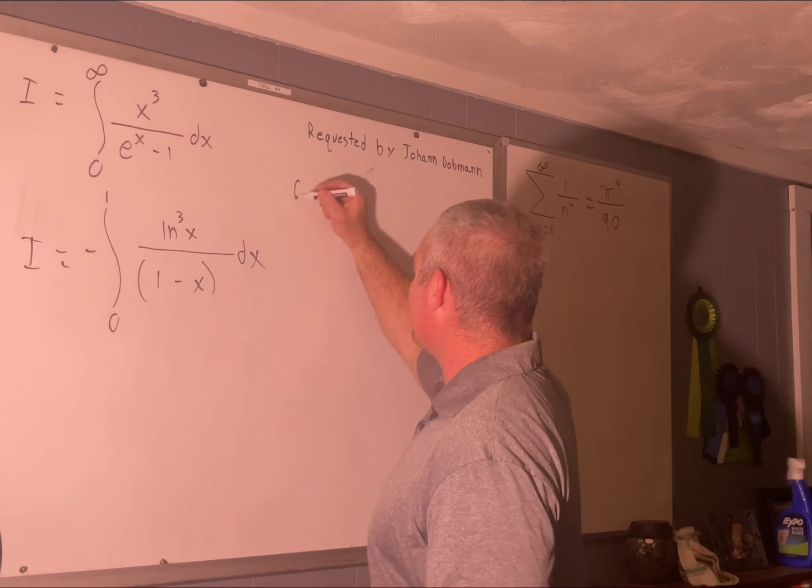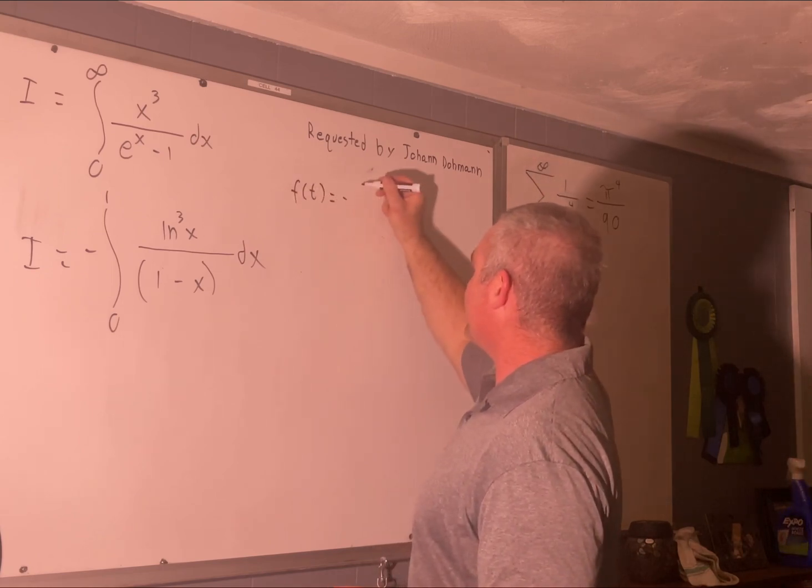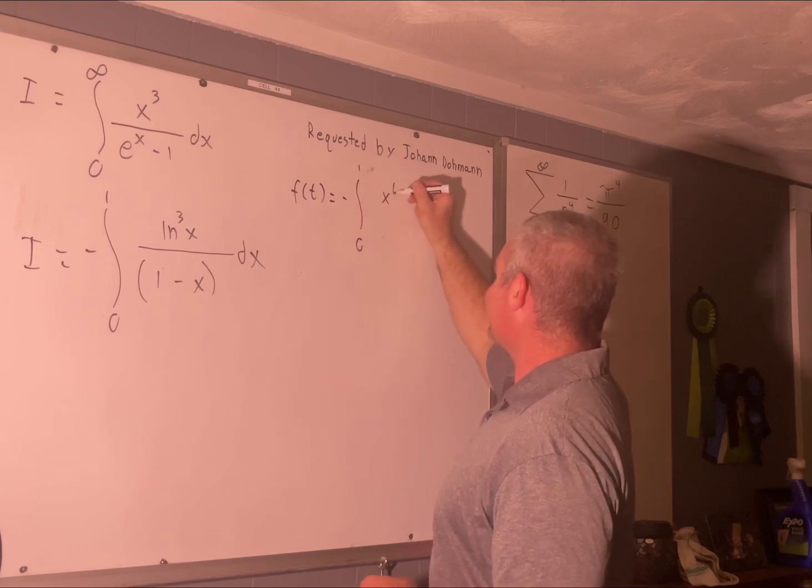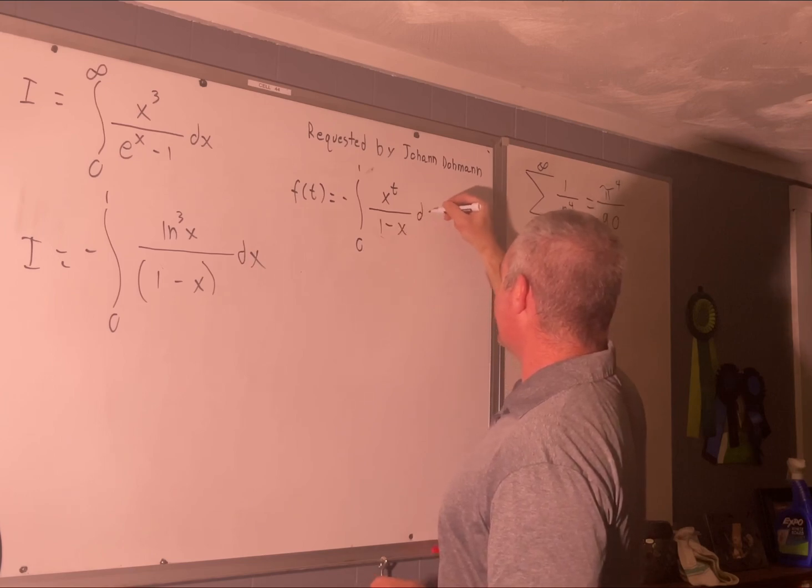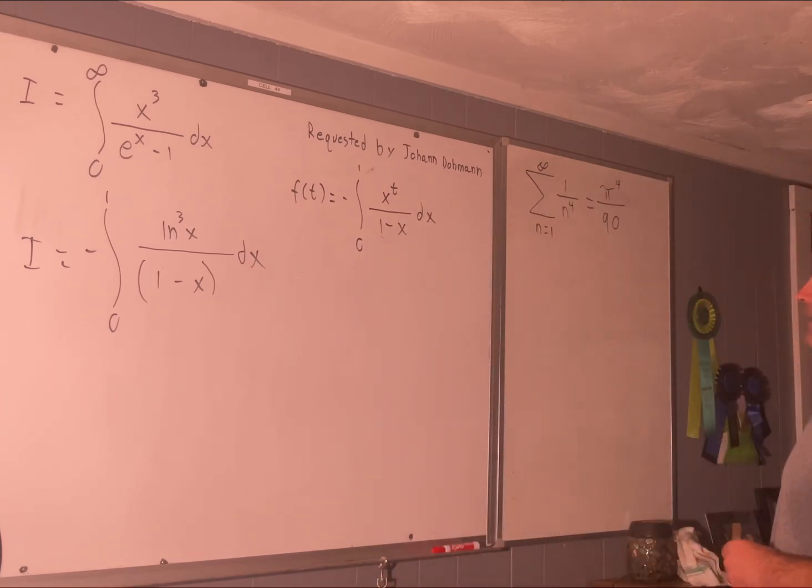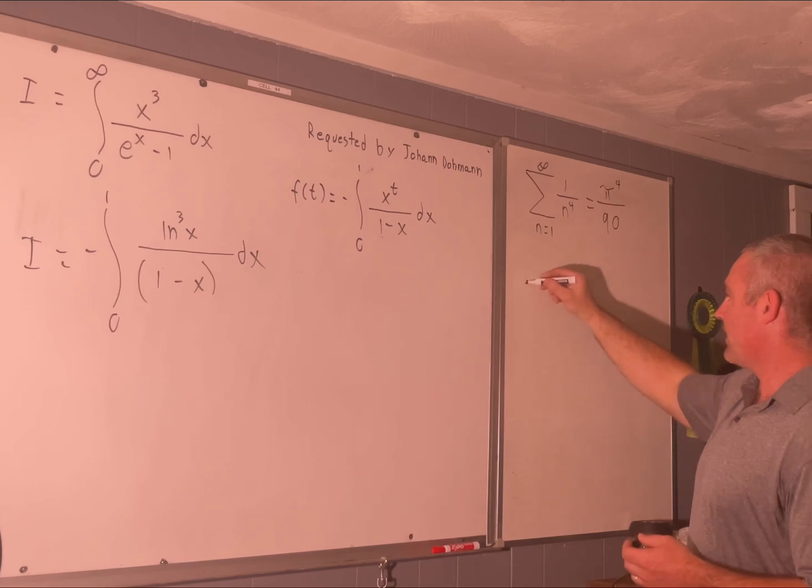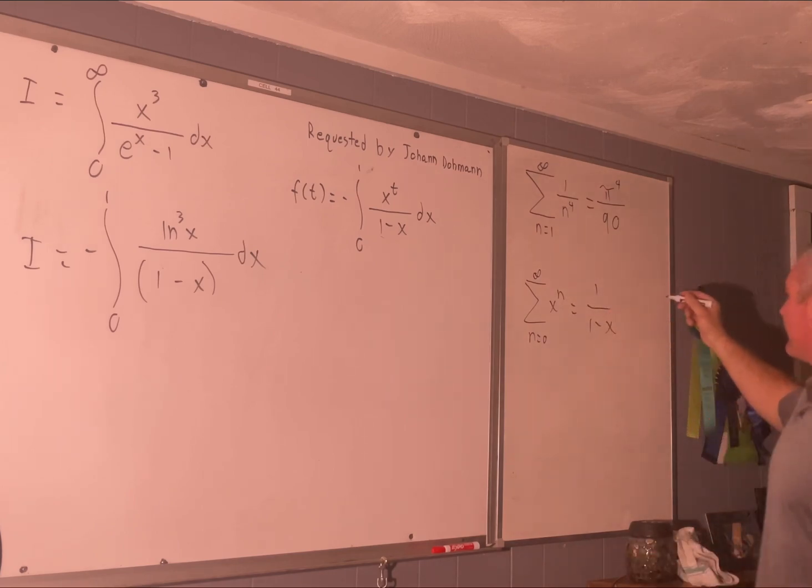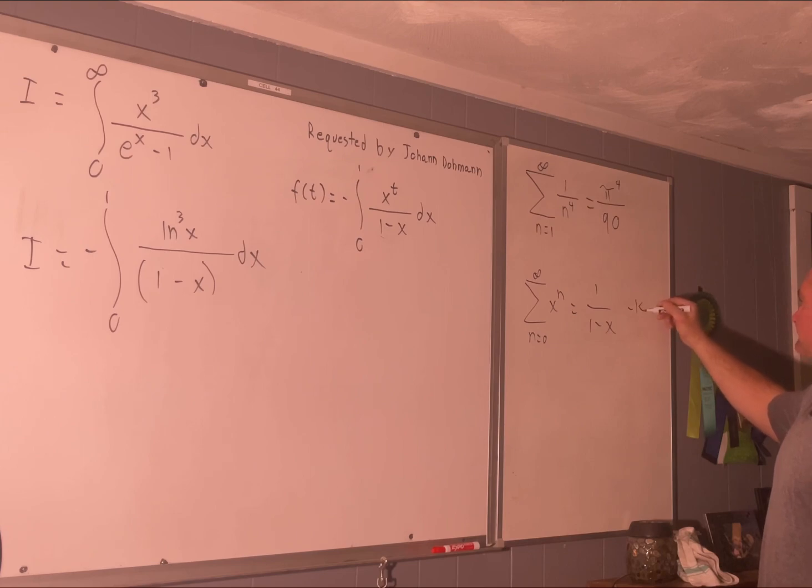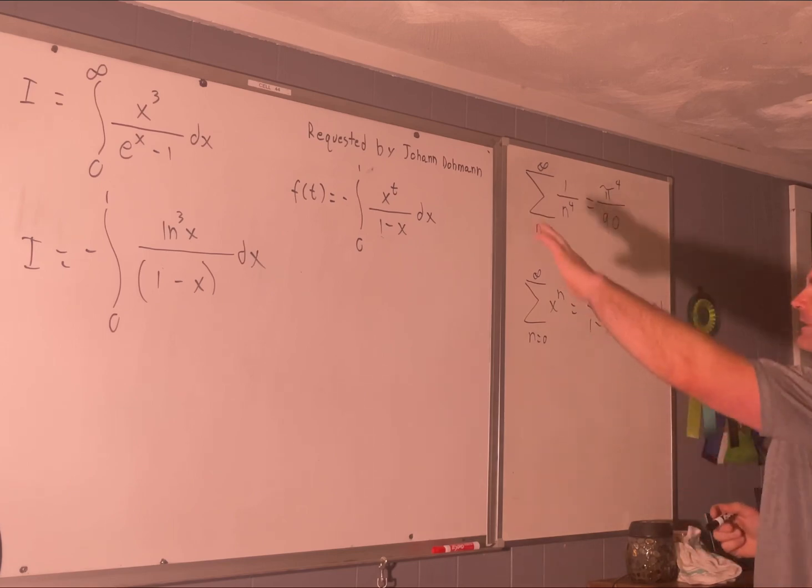Let's define a function of t equal to negative integral 0 to 1 of x to the t over 1 minus x dx. Okay. Well, let's find another way to write that.